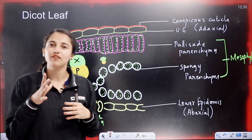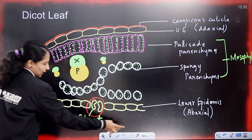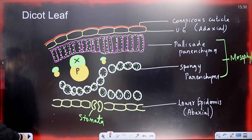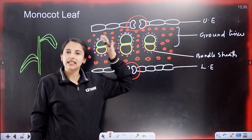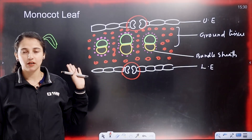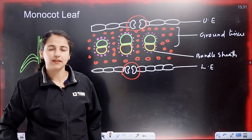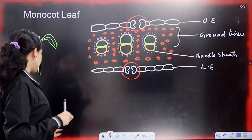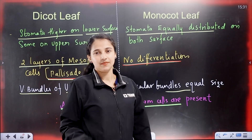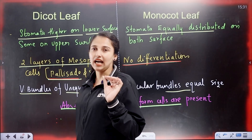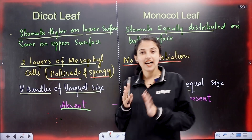This tissue contains chloroplasts, which perform photosynthesis. In the monocot leaf, there is no spongy and palisade differentiation — the vascular bundles are almost equal size with no bundle sheath difference. Another unique feature of the monocot leaf in some grasses is the presence of bulliform cells, which are absent in the dicot leaf.